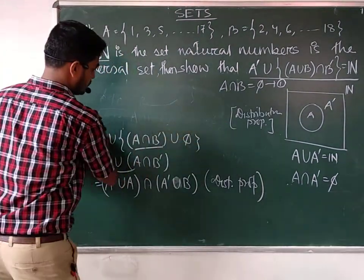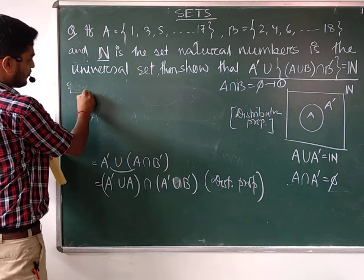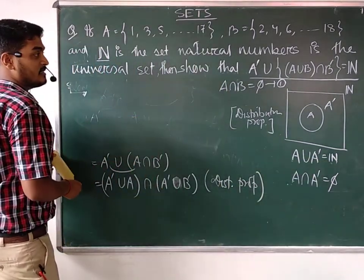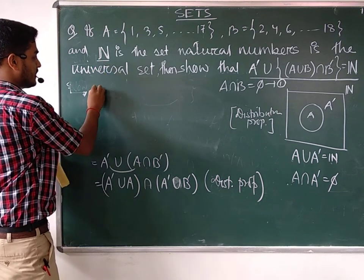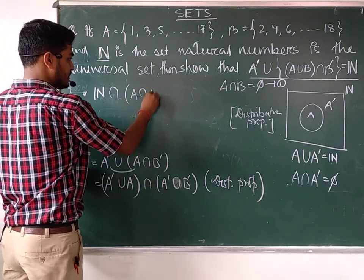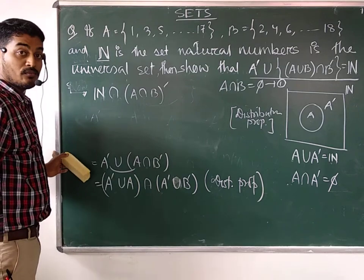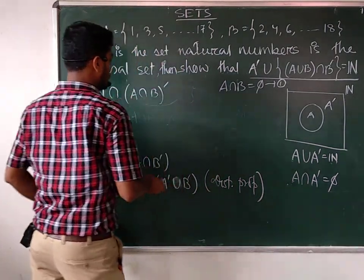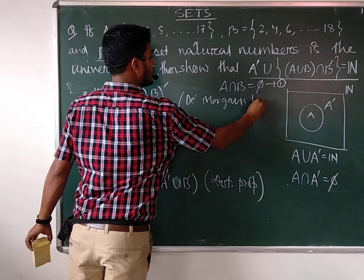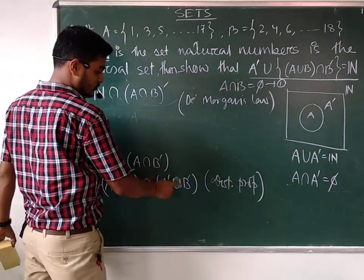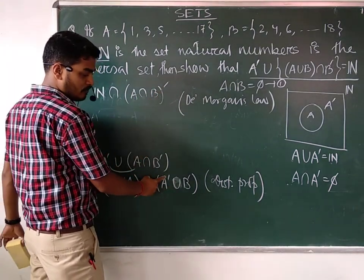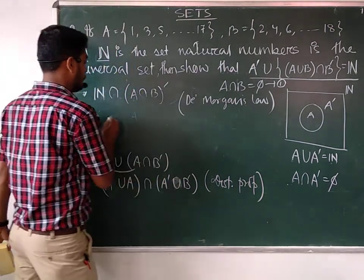So now we can simplify all those. The union of a set and its complement is the universal set. And here the universal set is the natural numbers N. So in place of this, you can write natural numbers N. And this expression can be written as A intersection B whole complement — by De Morgan's law. De Morgan's law states that A complement union B complement equals A intersection B whole complement, or A intersection B whole complement equals A complement union B complement. So again we have A intersection B equal to phi.